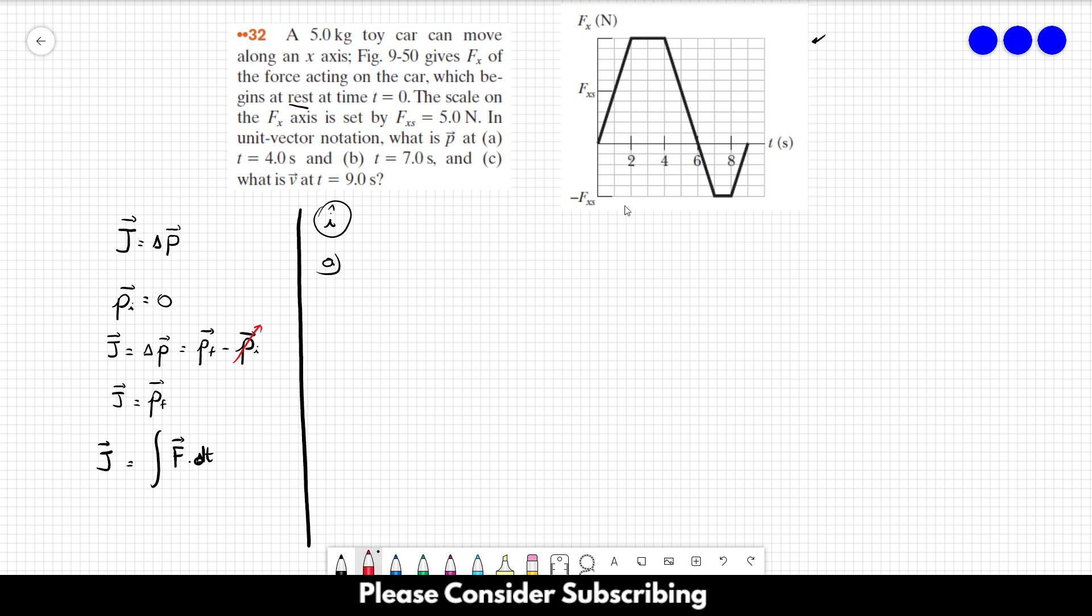So for letter A, let's see, we want t equals 4. So we have to calculate this area over here. So to make it easy, I'm going to split it into two different areas. This triangle over here and this rectangle over here.